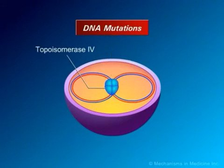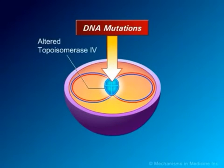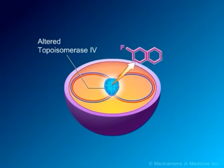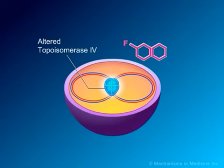Similarly, a mutation may occur that alters topoisomerase 4, either in the PARC or PARE gene, and results in reduced affinity of the fluoroquinolone antibiotic for this enzyme, and the bacterial organism will become resistant.